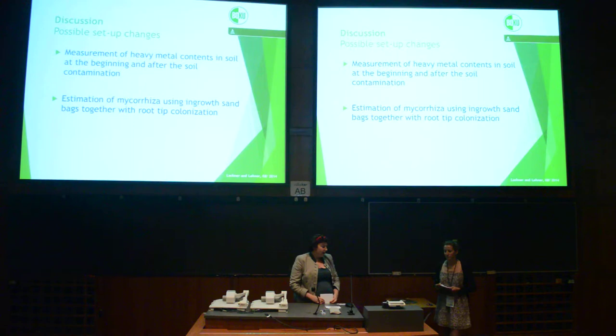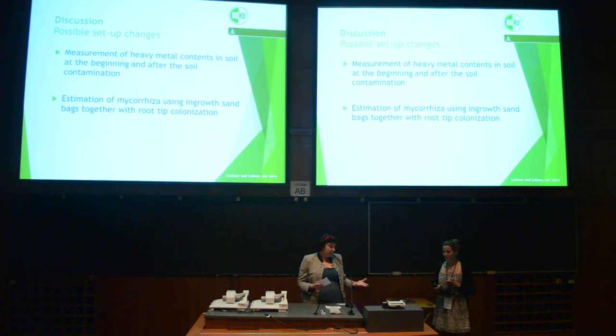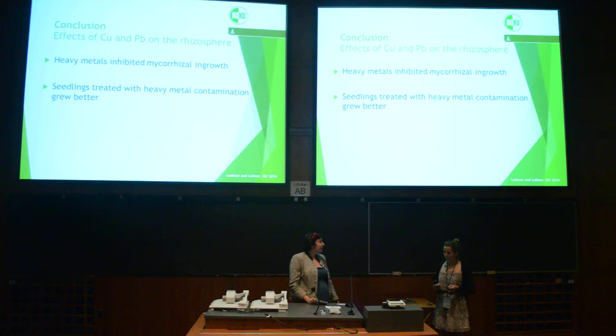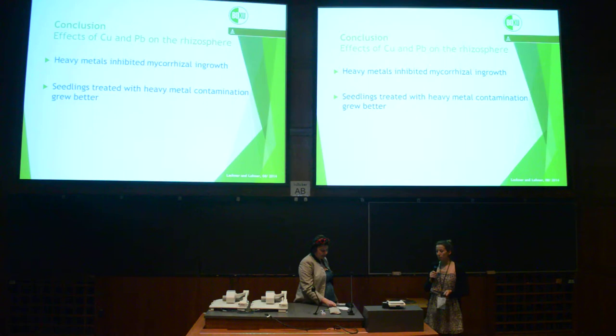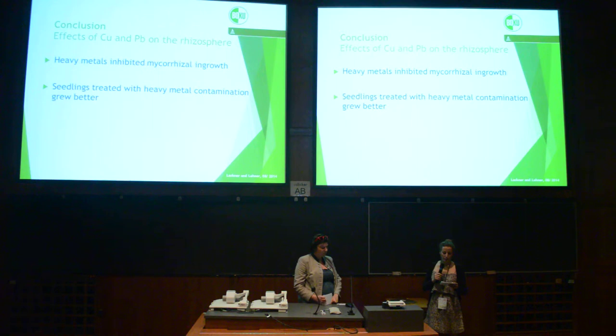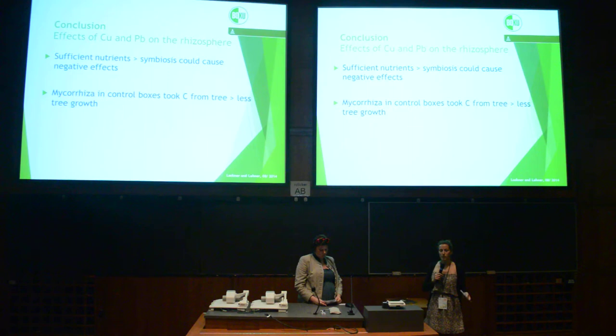We could possibly improve the setup by using in-growth sandbags together with root colonization to get more details about the mycorrhizal itself. It's also important to measure the heavy metal contents inside before and afterwards. In conclusion: heavy metals inhibited mycorrhizal in-growth and the seedlings treated with heavy metal concentrations grew better. Our hypothesis is that with sufficient nutrients, the symbiosis of mycorrhizal and trees could cause a negative effect — mycorrhizal in the control boxes took carbon away from the tree so it grew less.